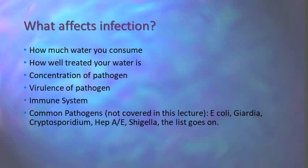The things you're going to have to consider are what affects whether or not you're going to contract some sort of infection. The things that affect this are how much water you consume, how well your water is treated, and what sort of pathogens are in the water as well as how strong those pathogens are. The immune system and the individual strength of the person drinking the water is also going to come into play. Someone who's immunocompromised really shouldn't be relying on these lectures, as their risk for contracting infection is significantly higher.